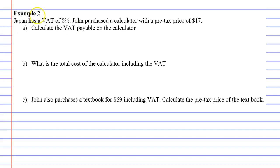Example 2. Japan has a VAT of 8%. John purchased a calculator with a pre-tax price of $17. Question A says calculate the VAT payable on the calculator.